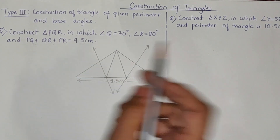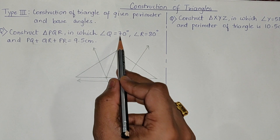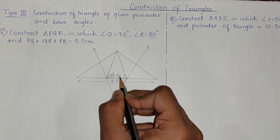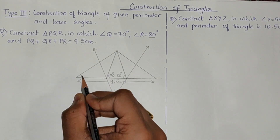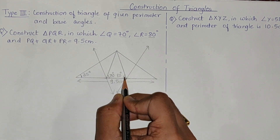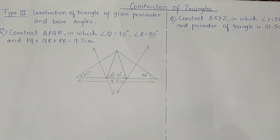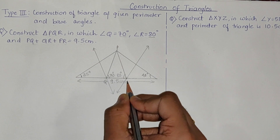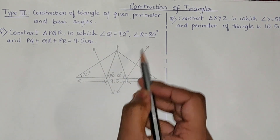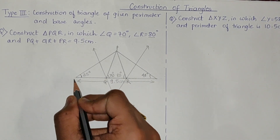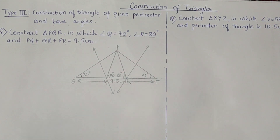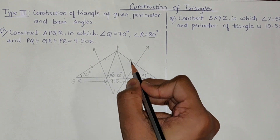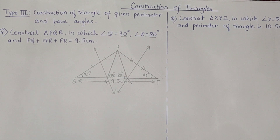This base is 9.5 cm, that is the perimeter. The base angles given are 70 degrees and 80 degrees. Since we construct half angles at the base, 70 degrees gives us 35 degrees here and 80 degrees gives us 40 degrees on the right side. This vertex is P, this is Q (70°) and this is R (80°). The perpendicular bisector divides these two sides equally.